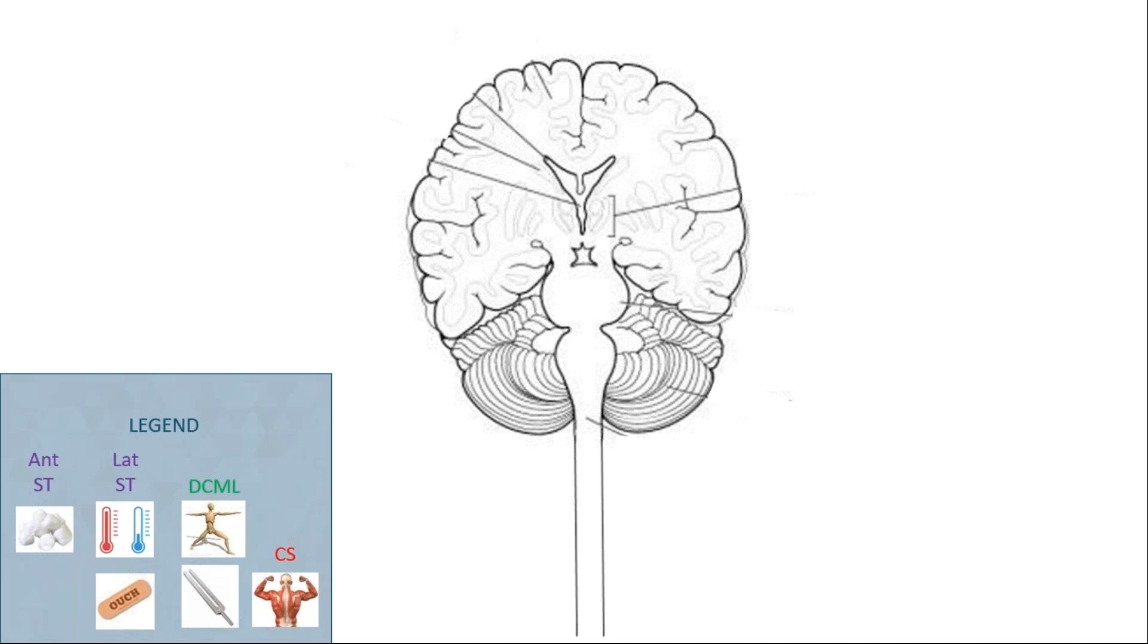Now using this legend here and a color system, I'm going to trace out the different tracts and how they run within the spinal cord to help you understand the Brown-Séquard presentation. In this image we have the brain, we have the brain stem, and we have the spinal cord. And what is important to know is where these tracts cross within the central nervous system.